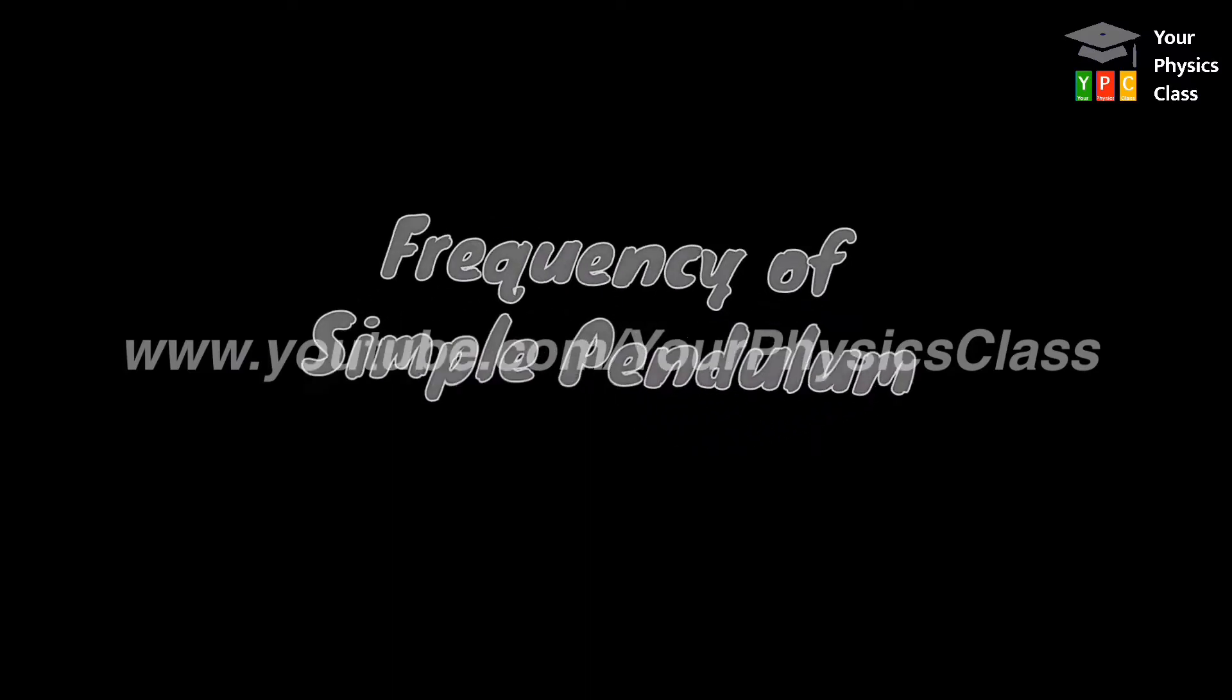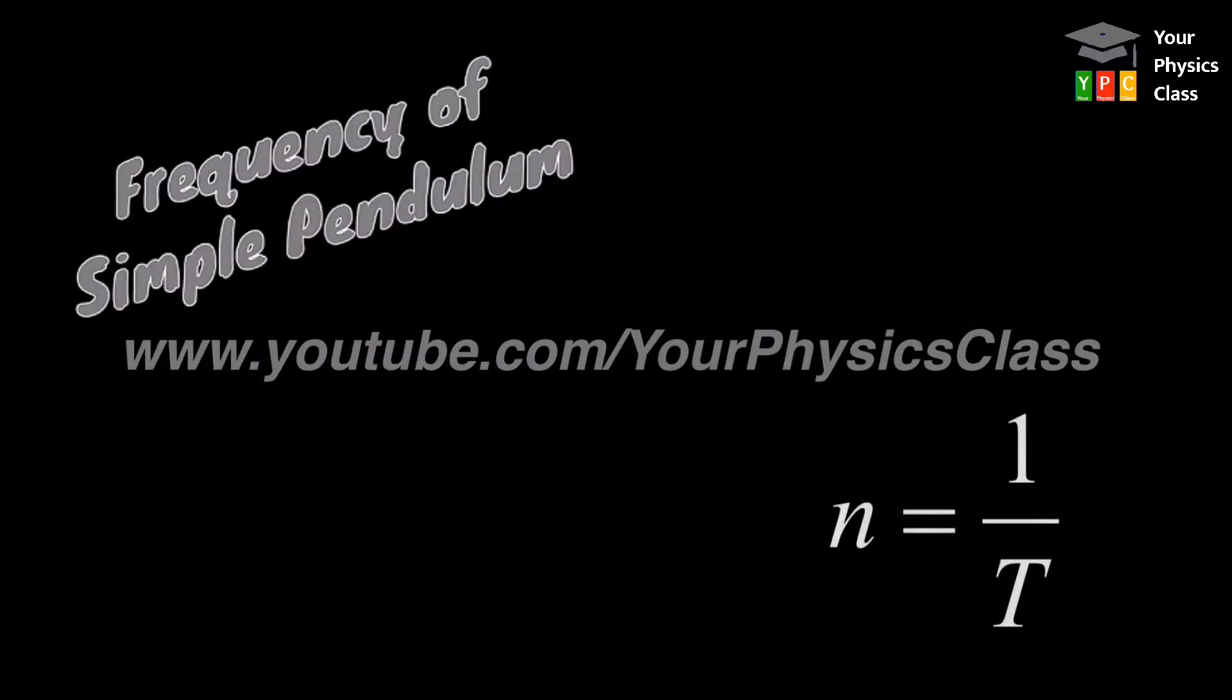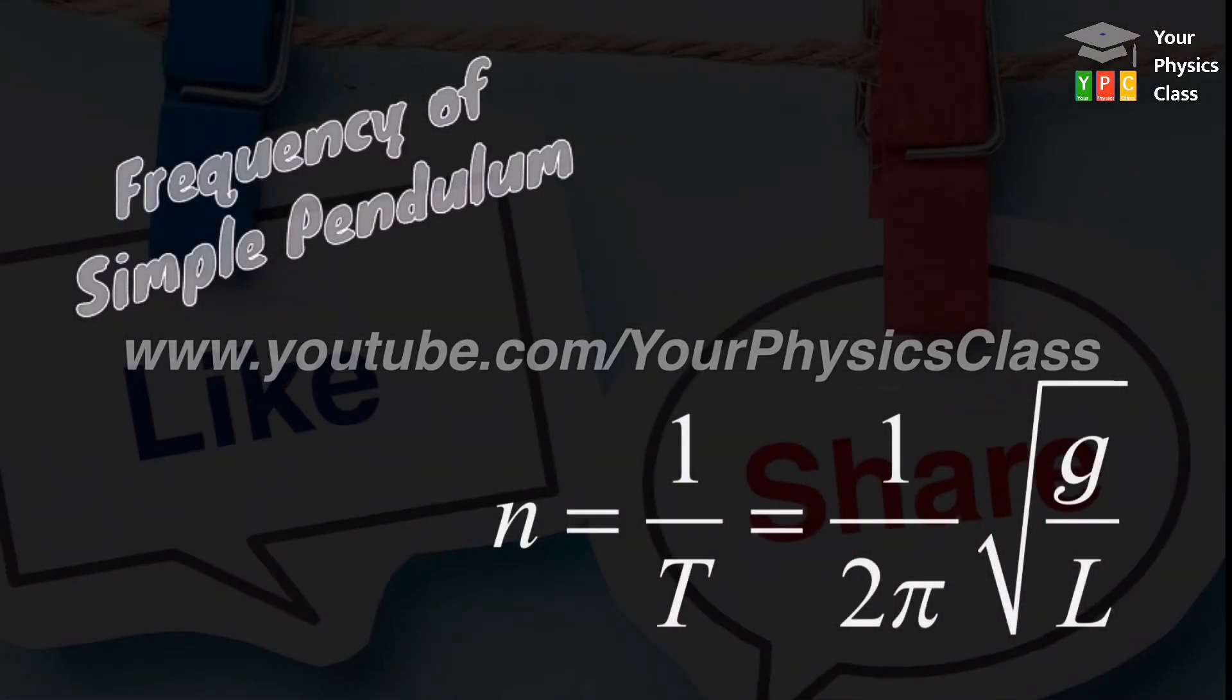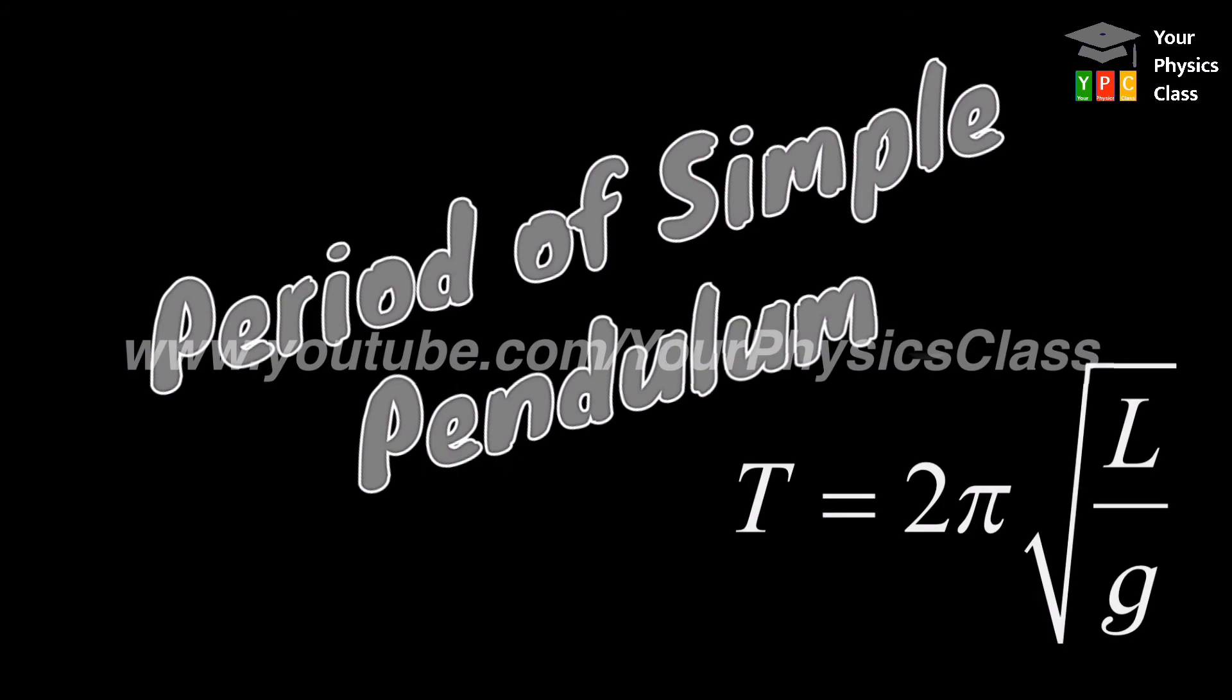This is the expression of time period of simple pendulum. Friends, if you are asked frequency of simple pendulum, then N equals 1 upon T, substitute this value in this formula. Then you will get frequency of simple pendulum, N equals 1 upon 2π under root g by L. If this is not asked, then there is no need to write here, but if question asks this, then you can write it this way.